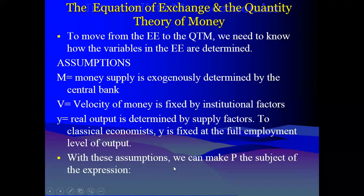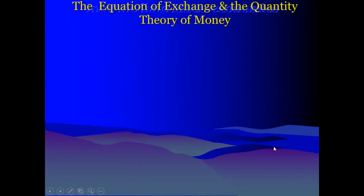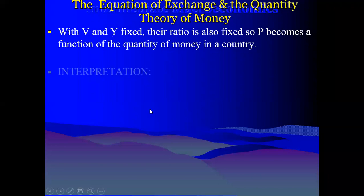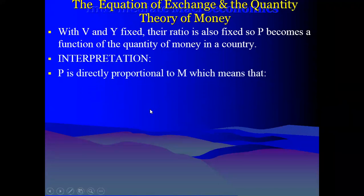With these assumptions, we can make P the subject from the equation of exchange. MV = PY. Dividing through by Y, we have P = MV/Y. With V fixed and Y fixed, the ratio V/Y should be fixed. So we can see that there is a direct proportionality between P and M.